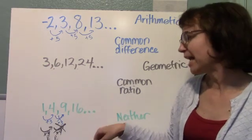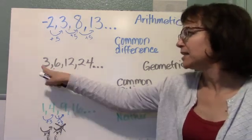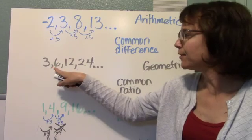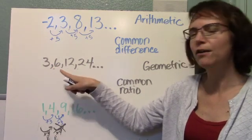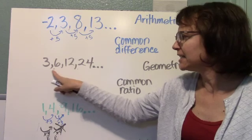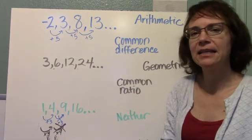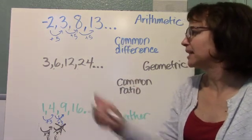Now this, if I look at it in the same way, I notice that from 3 to 6, I would add 3. But to get from 6 to 12, adding 3 would not get me there. So this is different than an arithmetic sequence. This is called a geometric sequence.